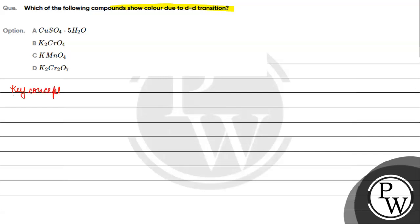The key concept for this question is d-d transition. Basically, we need to see where we have an electronic transition between T2G and EG levels. If we have such an electronic transition, we call it a d-d transition.